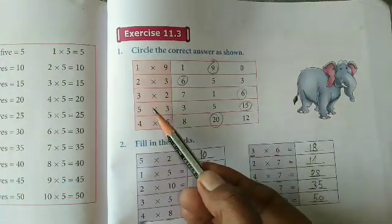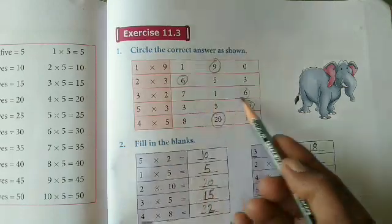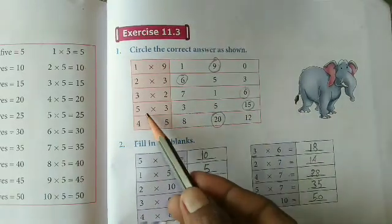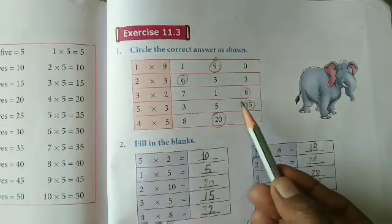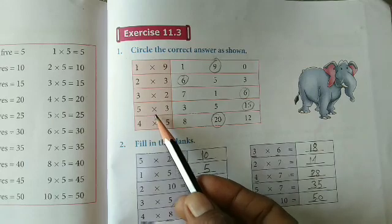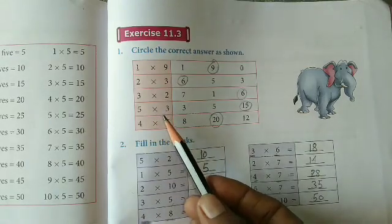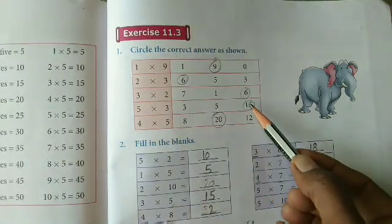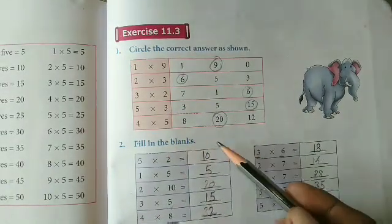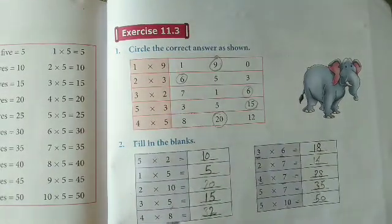3 × 2. 3 ones are 3, 3 twos are 6, so I am circling 6. 5 × 3 equals 15. 5 ones are 5, 5 twos are 10, 5 threes are 15, so I am circling 15. 4 fives are 20, so I am circling 20.